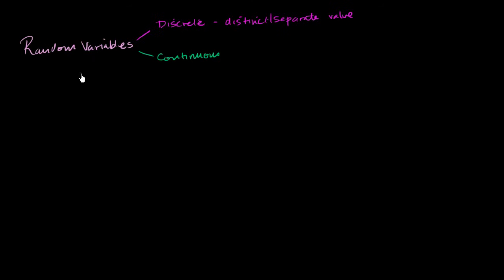While continuous — and there's another definition for the word discrete in the English language meaning polite, or not obnoxious, or kind of subtle — that is not what we're talking about. We are not talking about random variables that are polite. We're talking about ones that can take on distinct values.